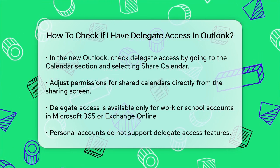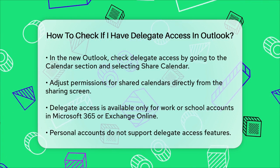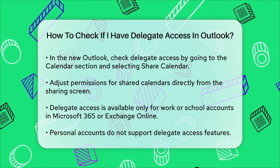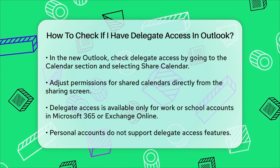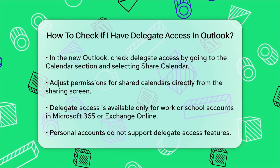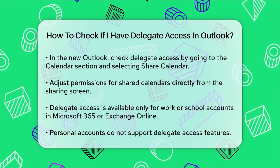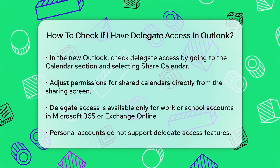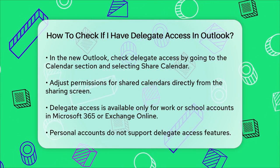Remember, Delegate Access is only available if you're using a work or school account in Microsoft 365 or with Exchange Online. So if you're using a personal account, you won't have this feature. By following these steps, you'll be able to see if you have Delegate Access set up in Outlook and what permissions have been granted to others. This way, you can ensure that the right people have the right level of access to your email and calendar.